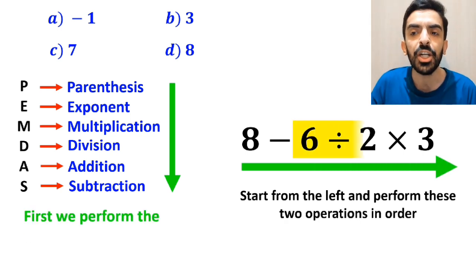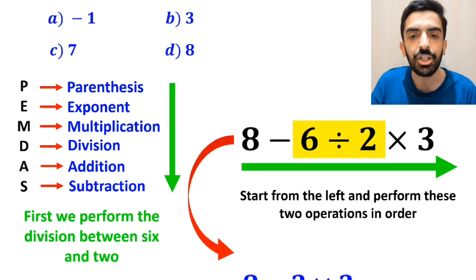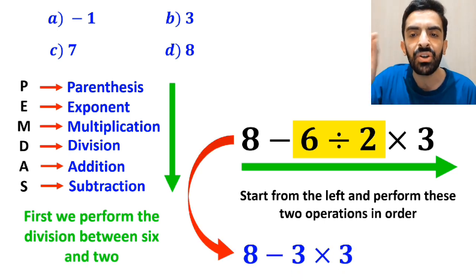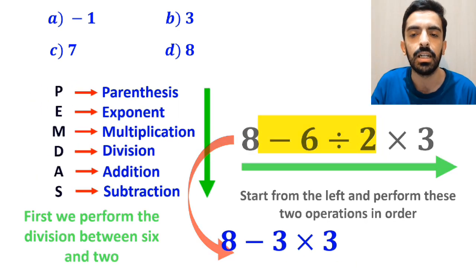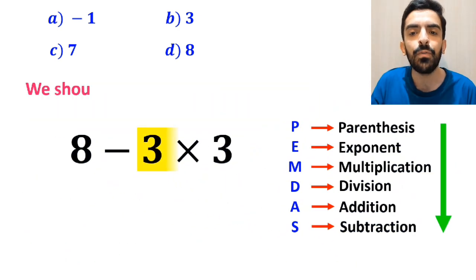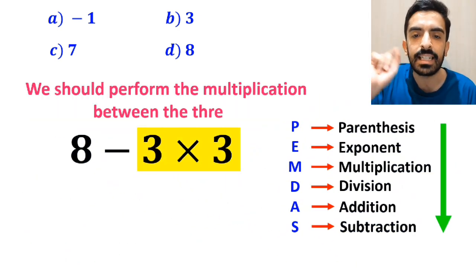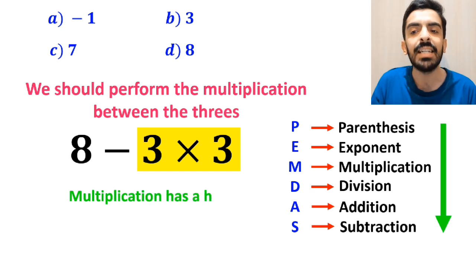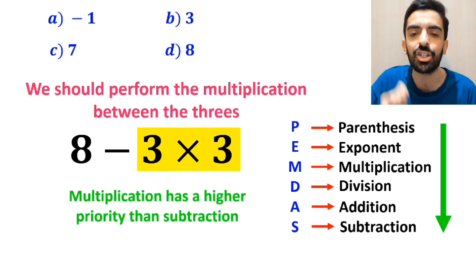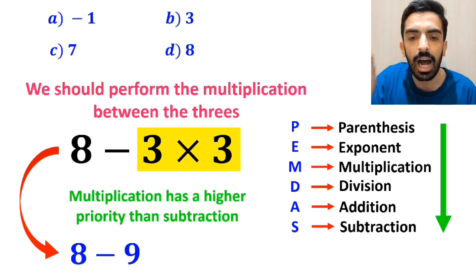So first we perform the division between 6 and 2. And instead of the original expression, we can write 8 minus 3 then times 3. In the next step, we should perform the multiplication between the 3s because multiplication has a higher priority than subtraction. So this expression simplifies to 8 minus 9.